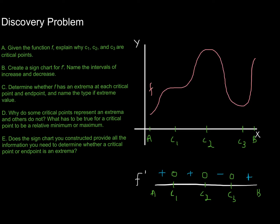Now I want to think about where the extreme values are. The obvious ones are c₂ and c₃ — those are very clearly local extrema. c₂ would be a local maximum and c₃ would be a local minimum. Looking at the endpoints, b looks to be a local max and a appears to be a local min. The one that isn't a local min or max is c₁ — I can't call it a local max because just to the right it's increasing, and I can't call it a local min because just to the left there'll be a point that's less than it.